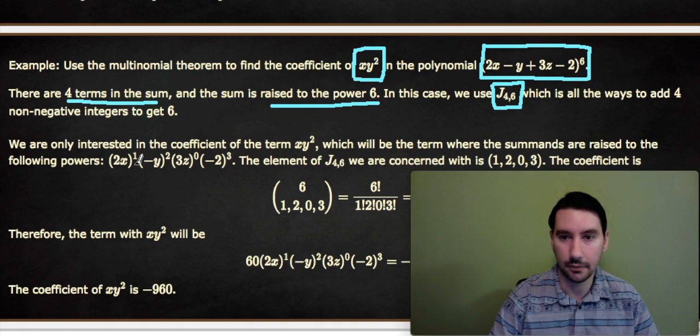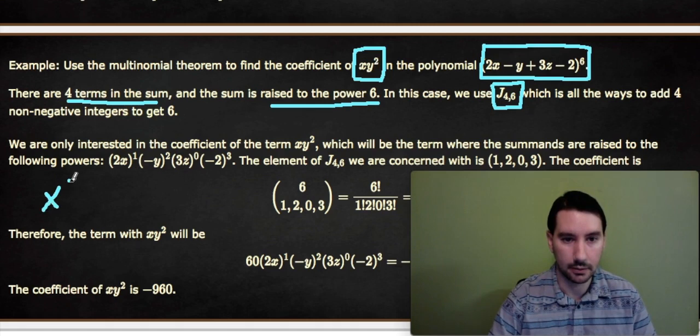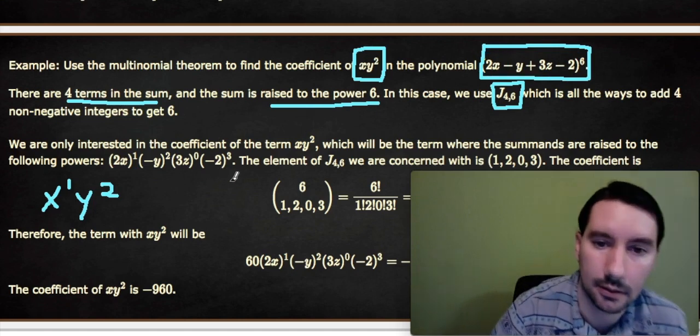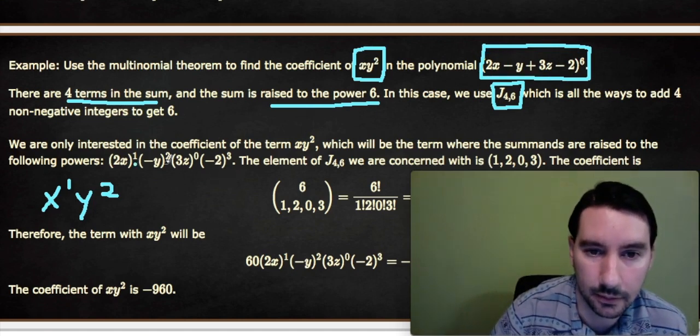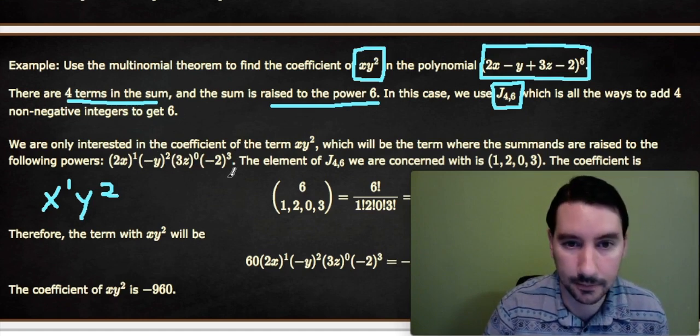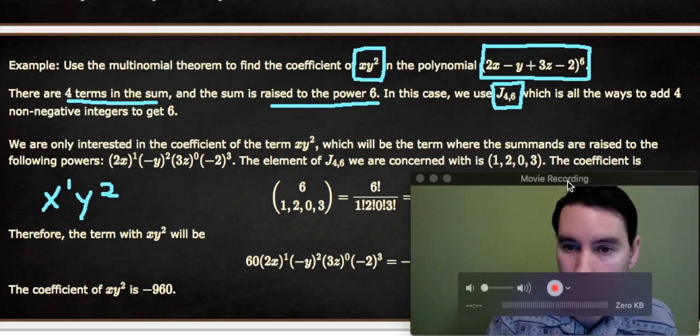So the way to do that is we would have, well, we want an x because we want x to the first power. So when we're trying to get xy², that's like x¹ y². We're going to take the 2x here, and raise that 2x to the 1. We're going to take the -y, take that -y and raise it to the 2. The 3z is going to be raised to the 0, and the -2 then has to be raised to whatever power will give us 6. So we have, we've used 1, we've used 2, we've used 0. That adds up to 3, so the -2 has to be the 3rd power, and that adds up to 6, since everything is to the 6th power.